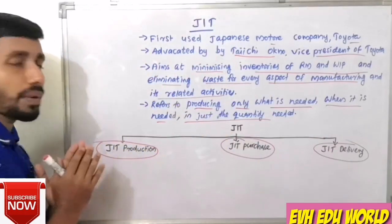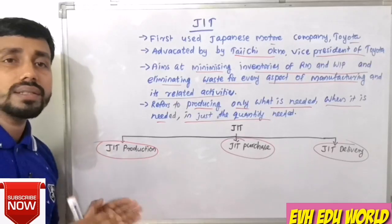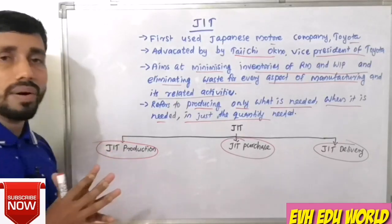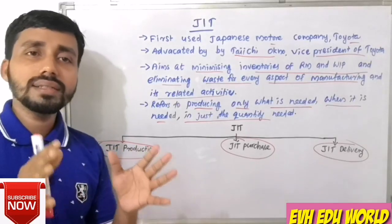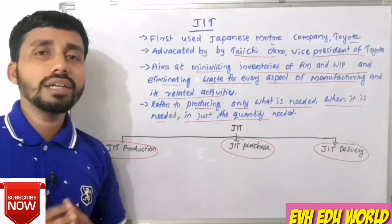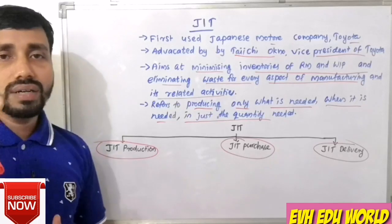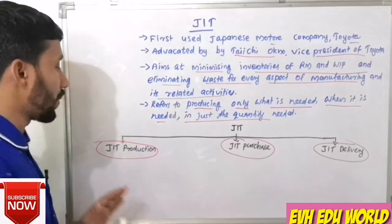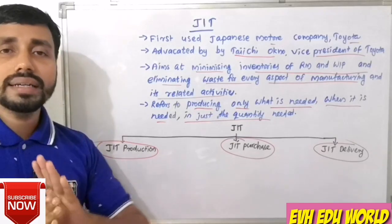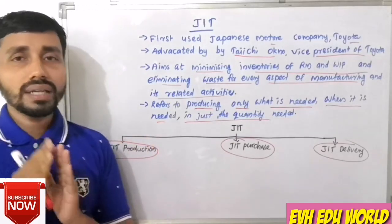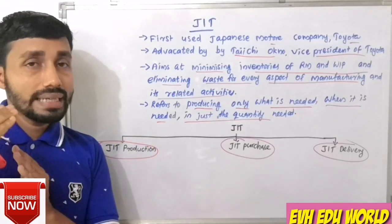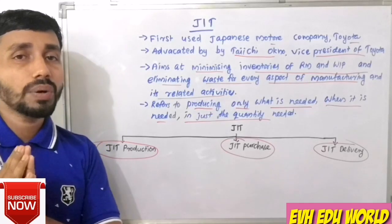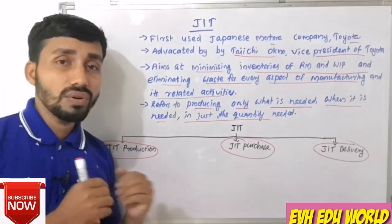First, JIT Production is based on demand. That is, just when there is a demand for a product, or when there is a customer for the product, then the company will produce the product. Each component on the production line is produced only when needed for the next stage.